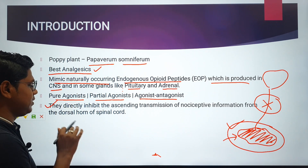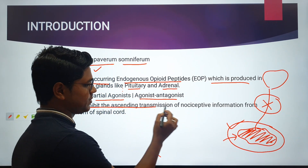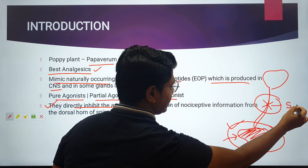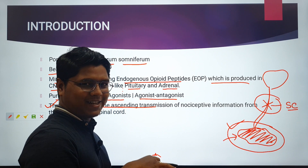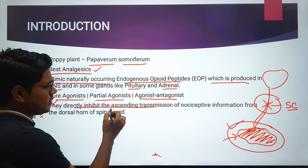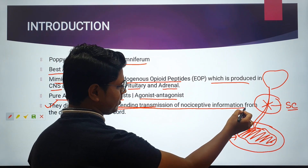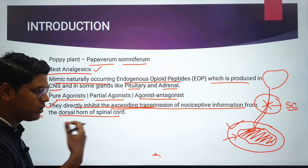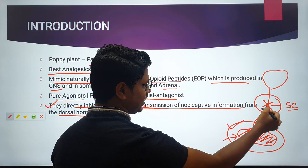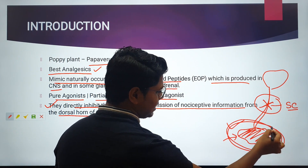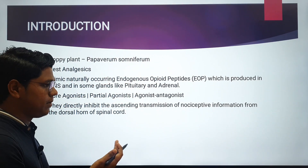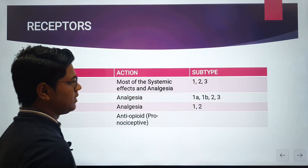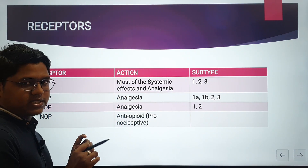Mechanism of action: opioids directly inhibit the ascending transmission of nociceptive information from the dorsal horn of the spinal cord, blocking the neural pathway. They do not reduce inflammation — they only block the pain pathway.